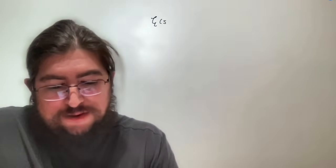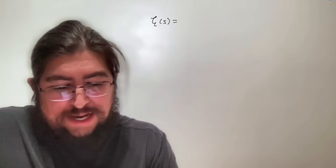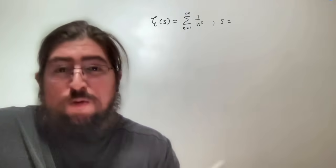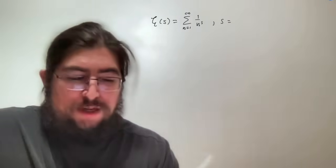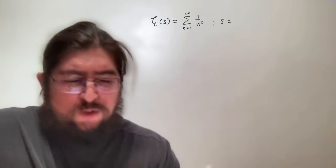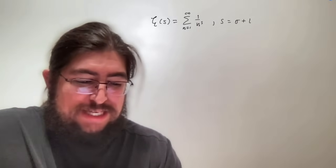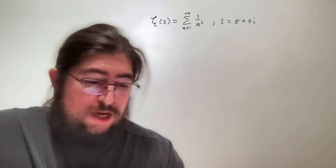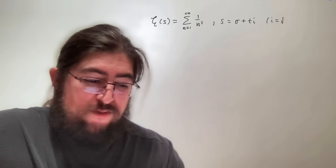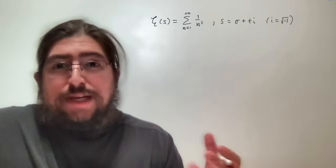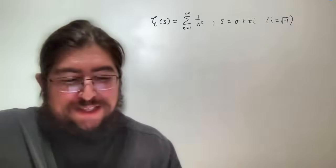The first thing to discuss is the Riemann zeta function, zeta of s. Zeta of s is defined as the sum from n equals 1 to infinity of 1 over n to the s, where s is a complex number. So what we say normally is that it's a number plus another number times i. The standard notation for zeta is sigma plus t times i. Of course, i is the square root of negative 1 — i squared is negative 1, and no real number satisfies that.